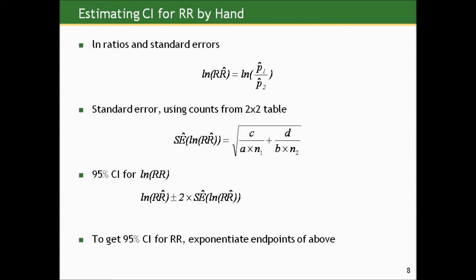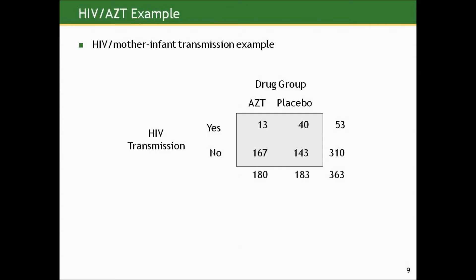So if we then take the log relative risk estimate and add and subtract two standard errors of this log relative risk, we get a 95% confidence interval for the log of the true relative risk, which is great. We have a confidence interval for the log relative risk. But we don't really want that. We want a confidence interval for the relative risk on the ratio scale. So what we do is we exponentiate, take the natural constant e and raise it to the power of the endpoints for the confidence interval on the log scale. Let me show you an example.